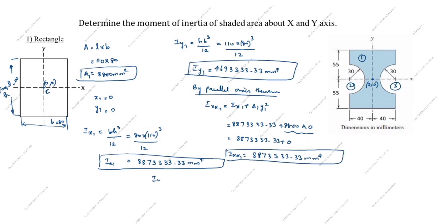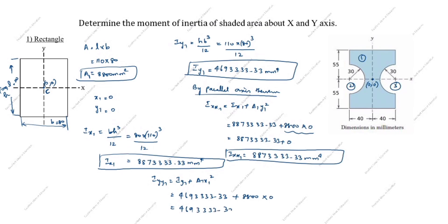Now we calculate IYY1 using the parallel axis theorem: IYY1 = Iy1 + A1·x1². Substituting: 4,693,333.33 + 8800 × 0 = 4,693,333.33 mm⁴. So IYY1 = 4,693,333.33 mm⁴. We have now calculated the moment of inertia of the rectangle about both x and y axes.